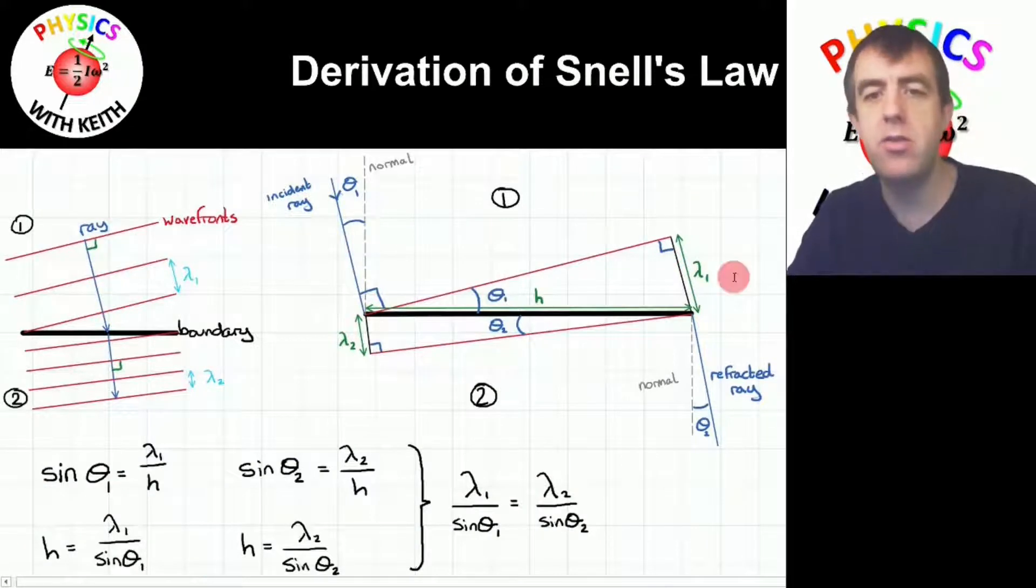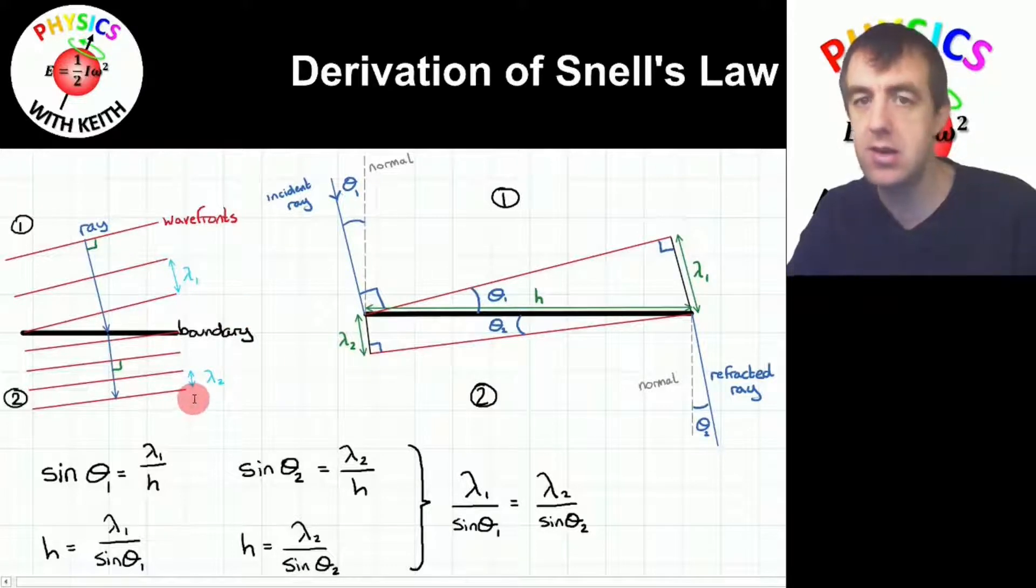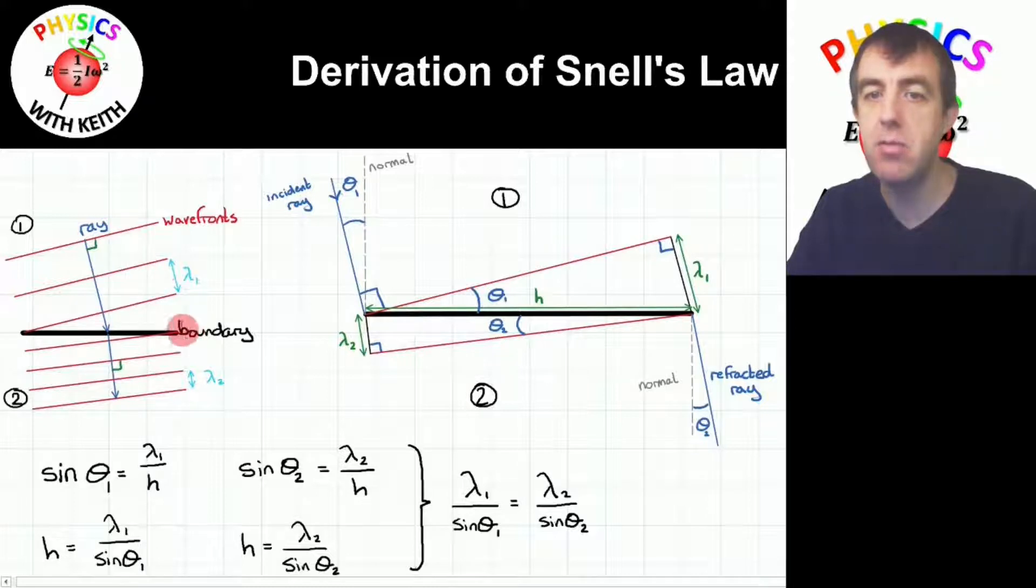So here are our diagrams. On the left is a diagram showing the wavefronts moving perpendicular to the wavefronts, so the ray is indicated with this blue arrow here, moving towards some boundary. Now, if this is an optical system, this boundary may be the boundary between two media of different optical densities, but this could be water waves, and this could be some step in the depth of the water, changing the speed of the water across that region.